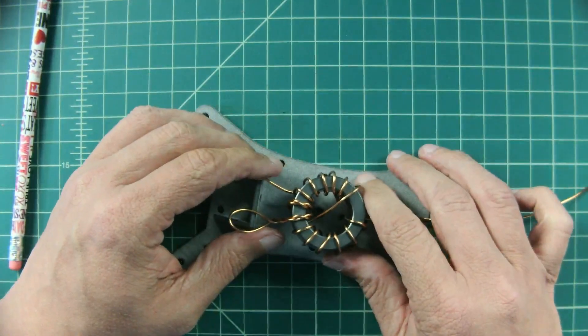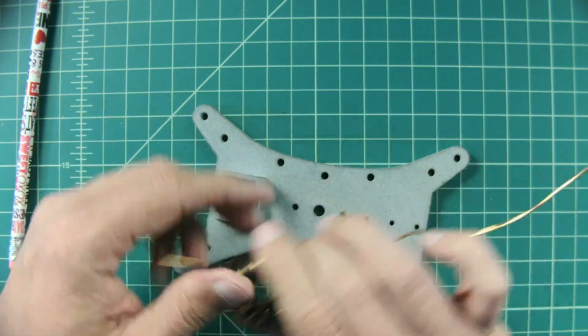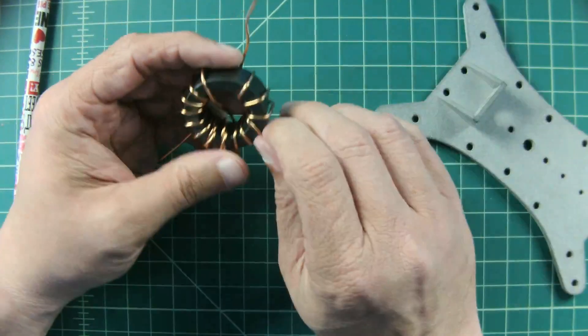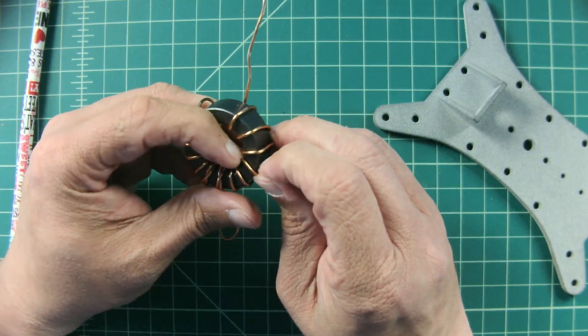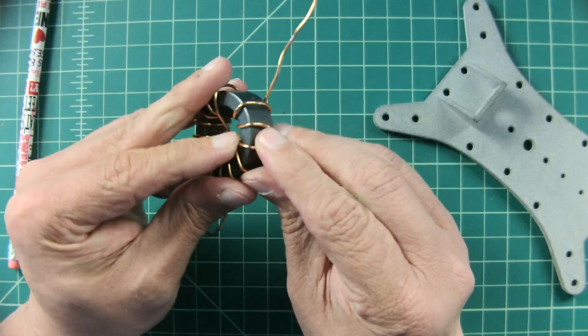Now this will get mounted to the frame like so. I'm going to clean these up just a little bit. I want to be careful not to mark or damage the toroid when I do this.